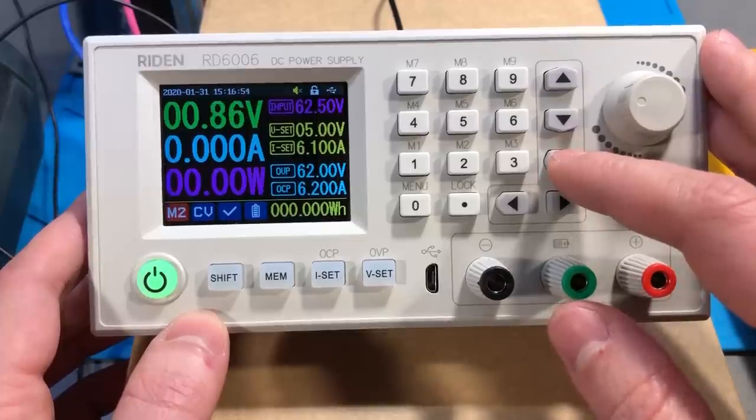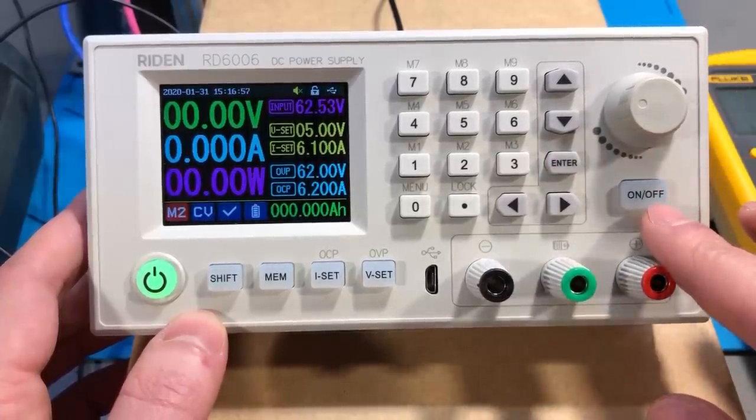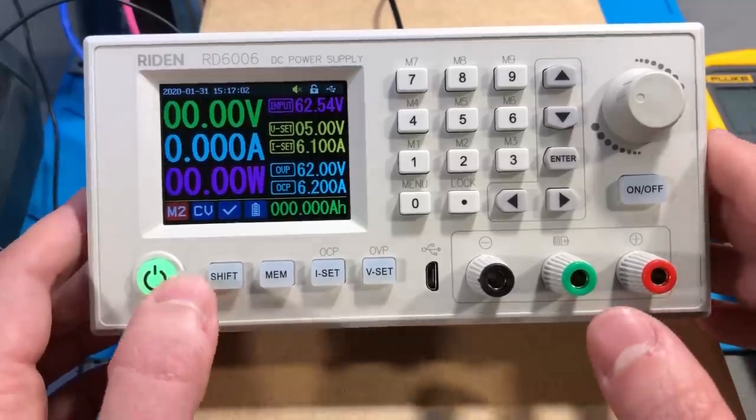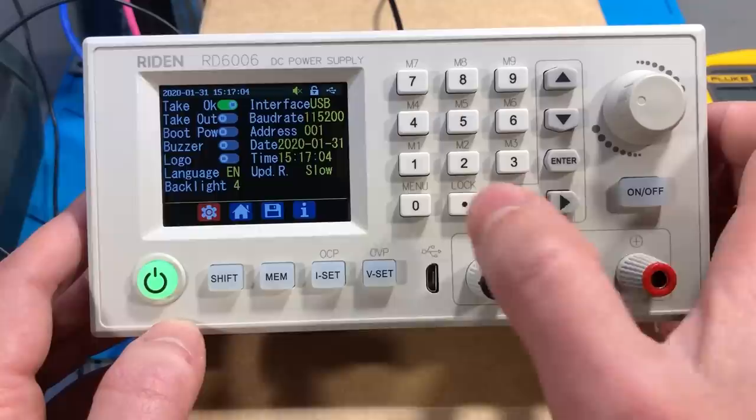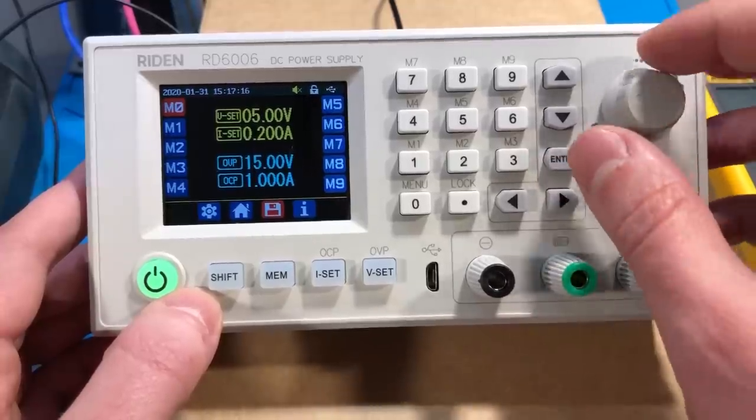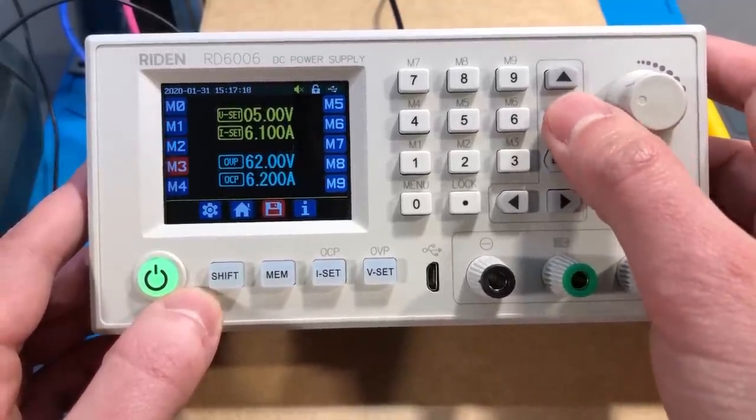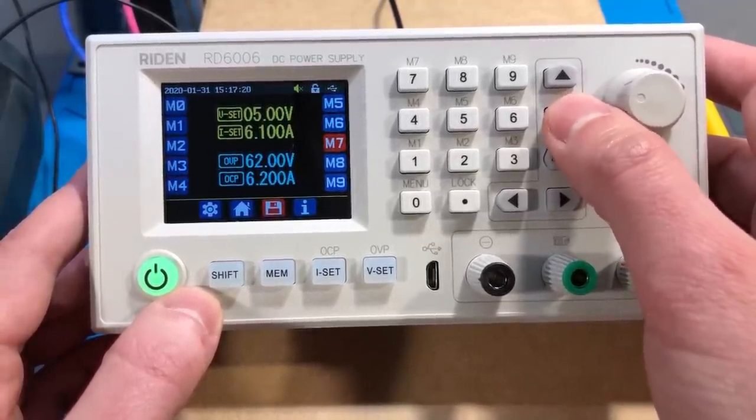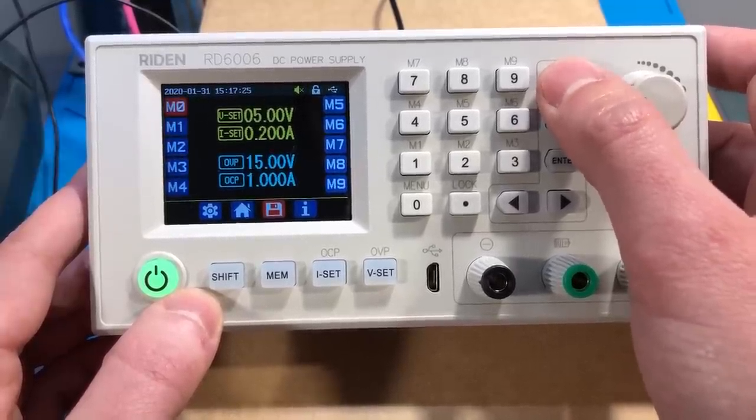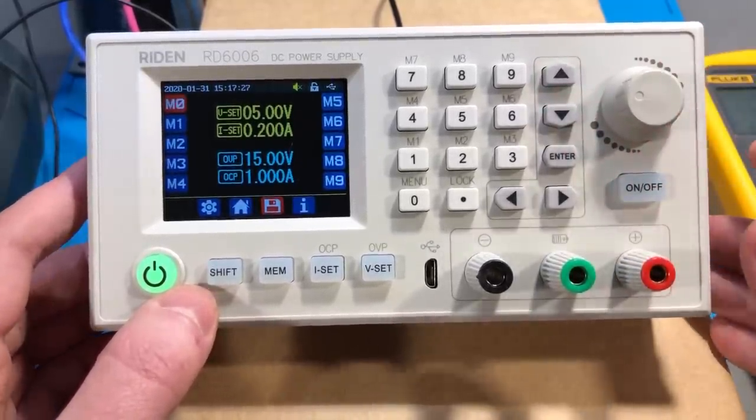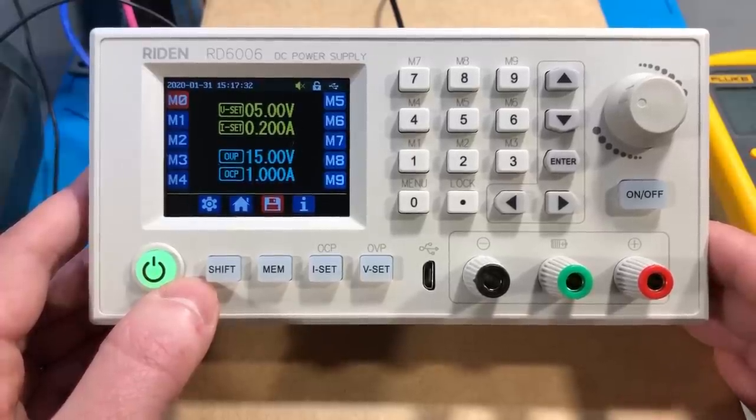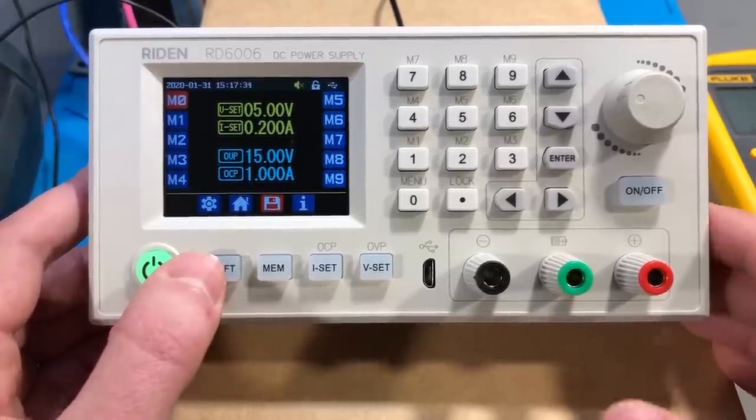Most of the buttons have secondary functions which are accessed using the SHIFT button as you would expect. For example, there are 10 memory slots which can be programmed with custom voltage, current, over-current and over-voltage protection settings and they can be recalled using a combination of the SHIFT key plus the corresponding number. Position 0 is reserved and is by default automatically loaded when the power supply starts. Calling a memory slot will cause the output to switch to the OFF state. I think that's configurable through the settings menu and I guess that's a good thing because it gives you a chance to check your settings before releasing those electrons into your device under test.